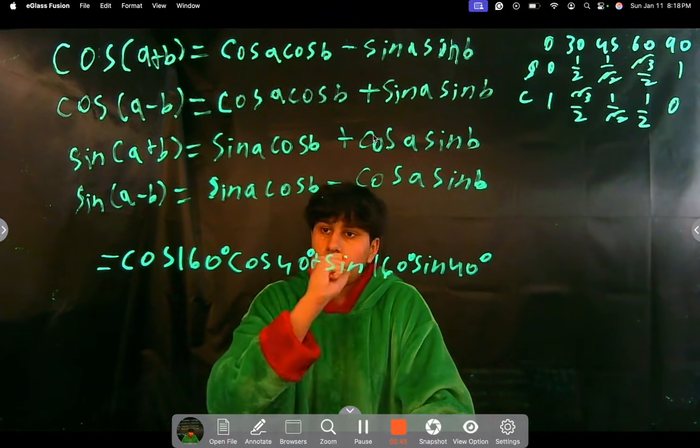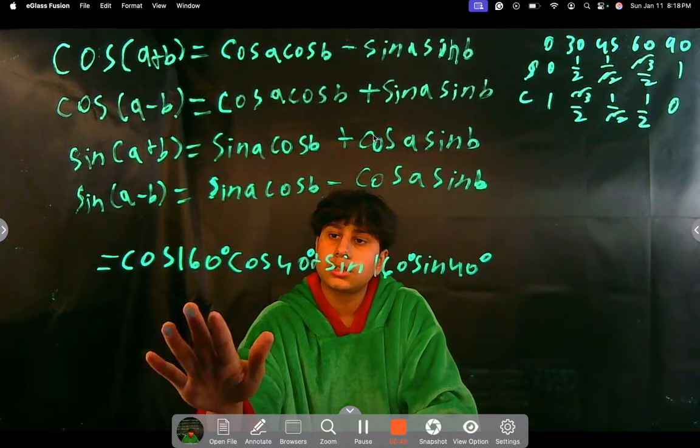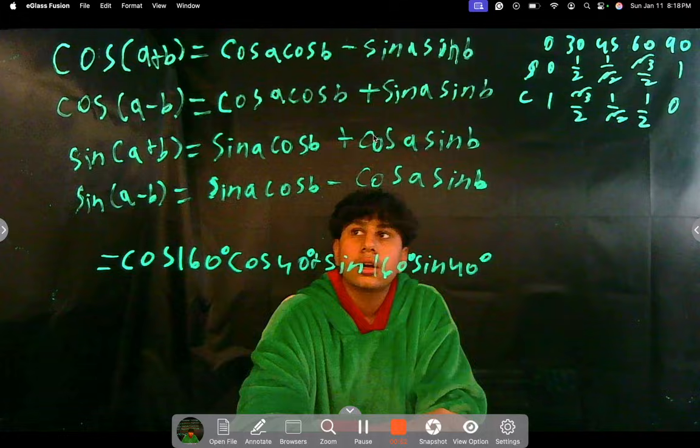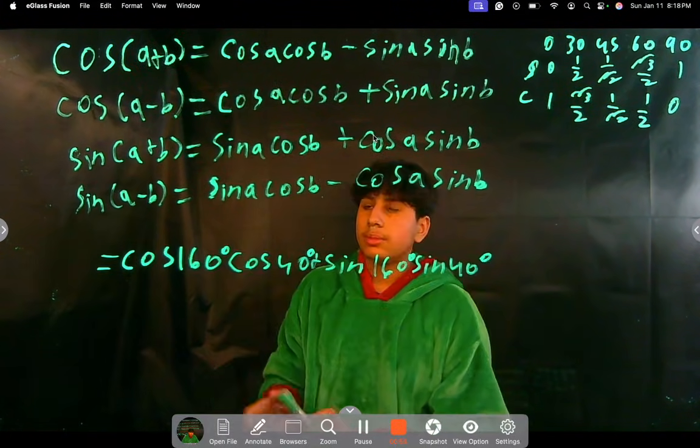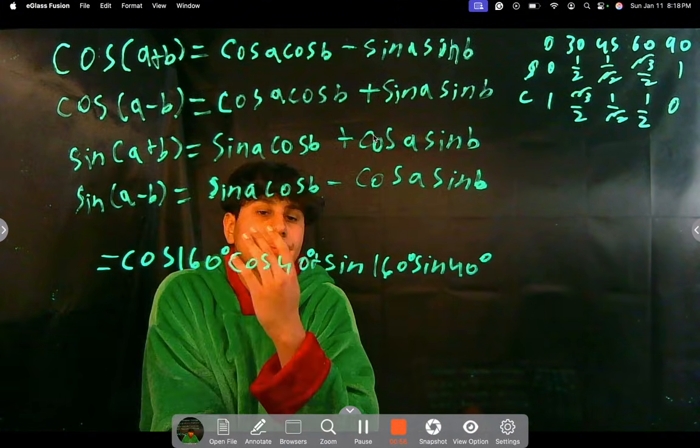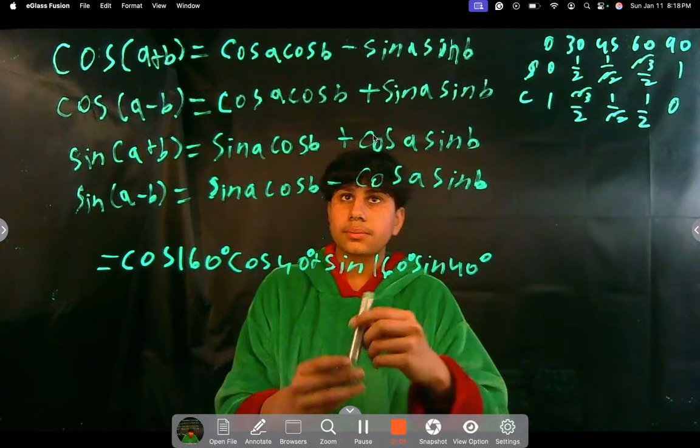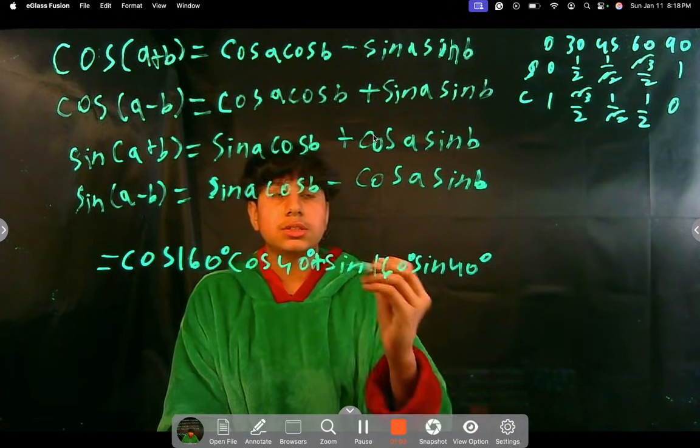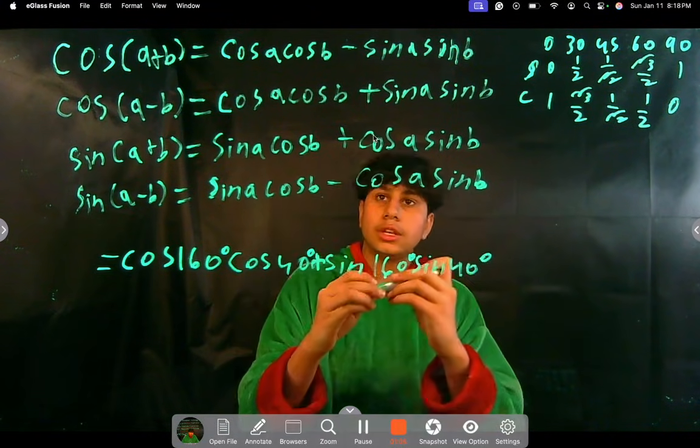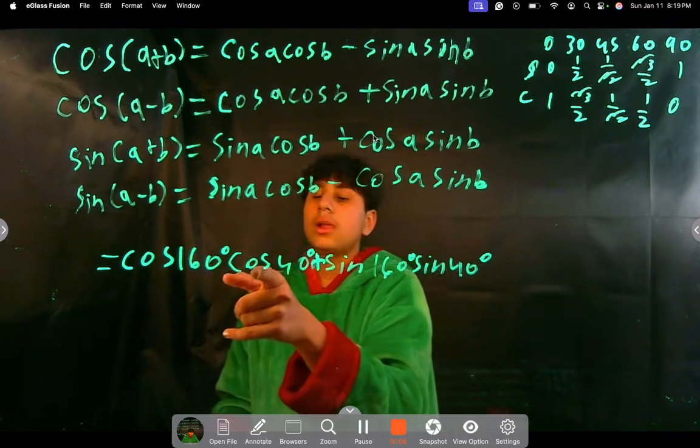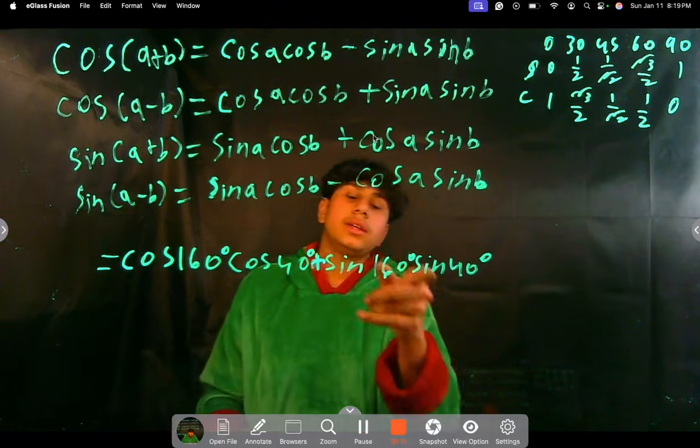Because we have our formulas written down here. Let's just say 160 degrees, let's say that's A, and 40 degrees, that's B. Because everything here is made from A and B. And we can just look for some patterns here. This is a plus sign in the middle, and there's also a plus sign here.